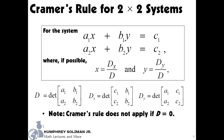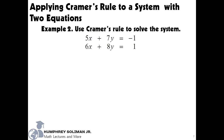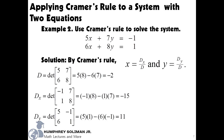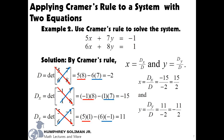To understand this better, we will use example number 2. Use Cramer's rule to solve the given system below: 5x plus 7y equals negative 1, and 6x plus 8y equals 1. The solution: d equals 5 times 8 minus 6 times 7, equals negative 2. dx equals negative 1 times 8 minus 1 times 7, equals negative 15. dy equals 5 times 1 minus 6 times negative 1, equals 11. Therefore, x equals 15 over 2 and y equals negative 11 over 2. The solution for the system is 15 over 2 and negative 11 over 2.